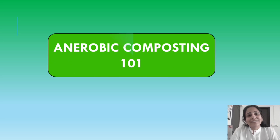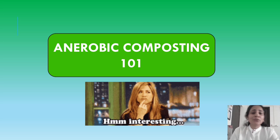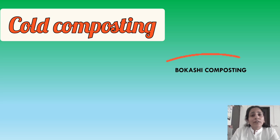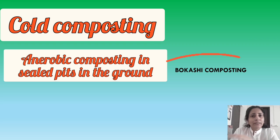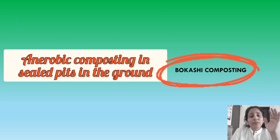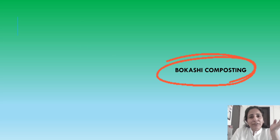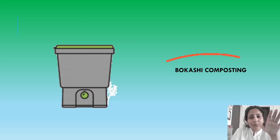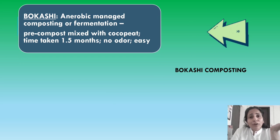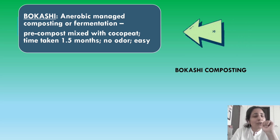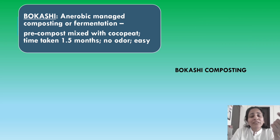There are certain things which aerobic composting may not handle as efficiently in a small home setup, which is why we need anaerobic composting. Cold composting, the unmanaged anaerobic type, involves digging pits which are sealed from air — but this takes a long time. For an apartment-type setup, we have bokashi composting, which is managed anaerobic composting, also called fermentation or pickling. It yields a pre-compost, which when mixed with coco peat gives ready compost in a claimed total period of one and a half months.